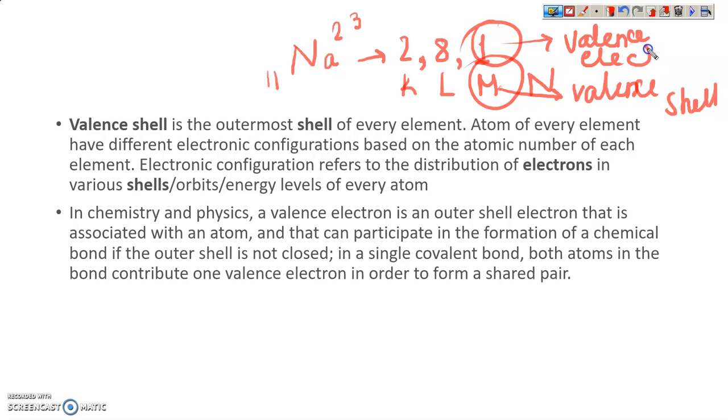The number in the outermost shell is valence electron and the shell it is in is the valence shell.